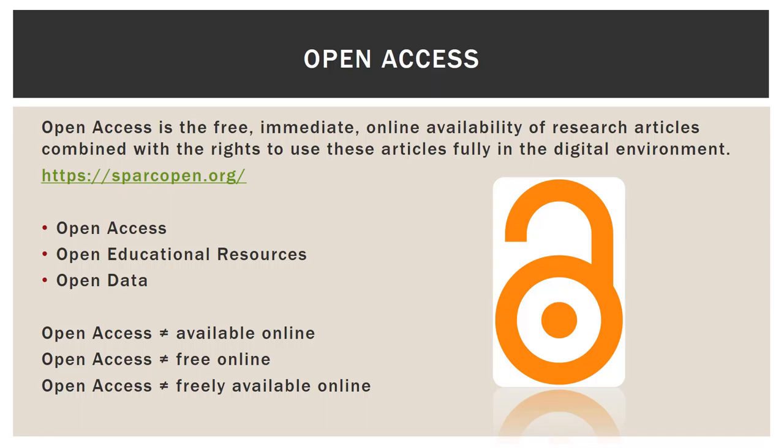There are other segments of the open access movement including open educational resources. These are things created specifically for educators, and there is another caveat with open educational resources called the five R's: retain, reuse, revise, remix, and redistribute. So usually when something is labeled as an open educational resource, you can also have those five R's along with it. There is also open data.